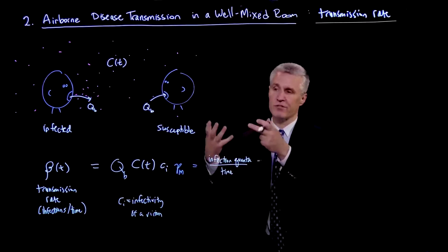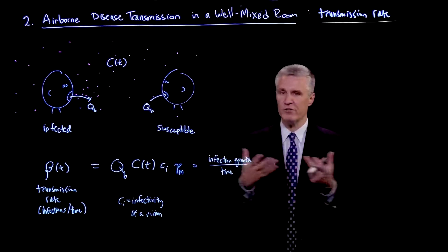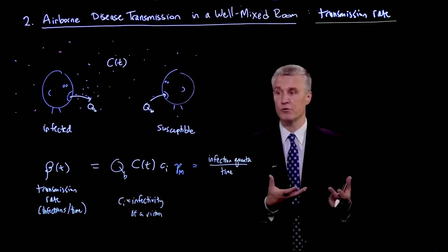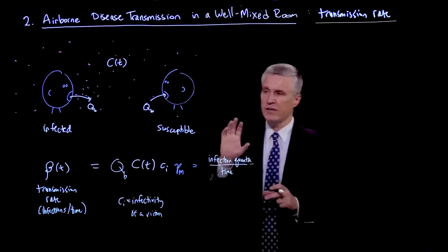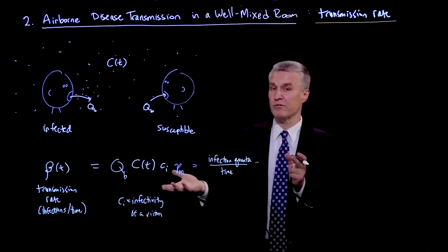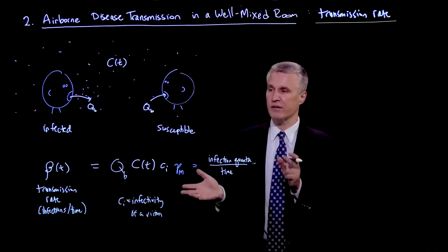So the number of susceptible people is changing. So we have to model the progression of the disease in the room, which we have not done yet. So that's why the beta is not the number of infected people, because eventually you run out of people to infect. So we have to account for that later.